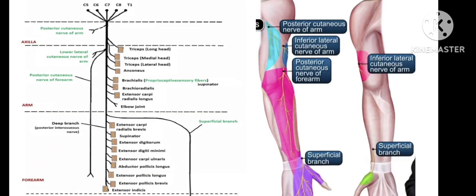Regarding the superficial branch: it crosses the wrist joint on both sides and provides sensory supply to the skin.